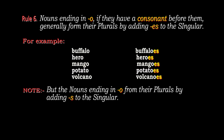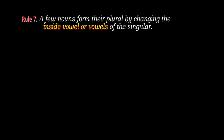Note: But some nouns ending in o form their plurals by simply adding -s. For example, bamboo changes to bamboos, piano changes to pianos, photo changes to photos. Though these words end with o, we just add -s to change them to the plural.